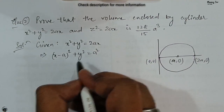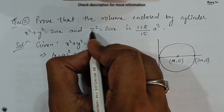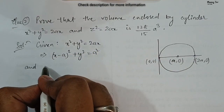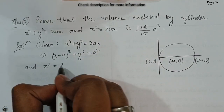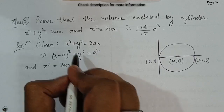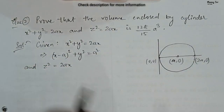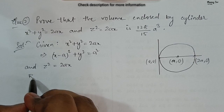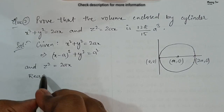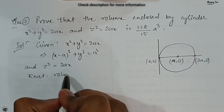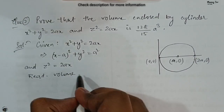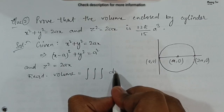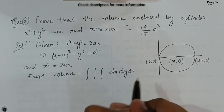The other equation given in the problem is z² = 2ax. So these two equations are given, and we need to find the volume enclosed by them. The required volume is given by the triple integral ∫∫∫ dx dy dz.